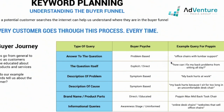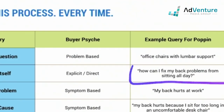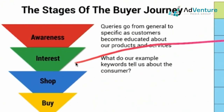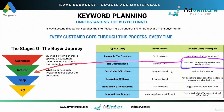'How can I fix my back problems from sitting all day?' I would say this is a pretty clear demarcation of somebody who is in the interest phase. They're already aware of the problem — aware they have a back problem, and that it comes from sitting all day. They're now expressing that emotional interest in fixing that problem. So it's a keyword you want to bid a little bit more on than something totally generic, but not as much as you would bid on a keyword for somebody looking to buy something.